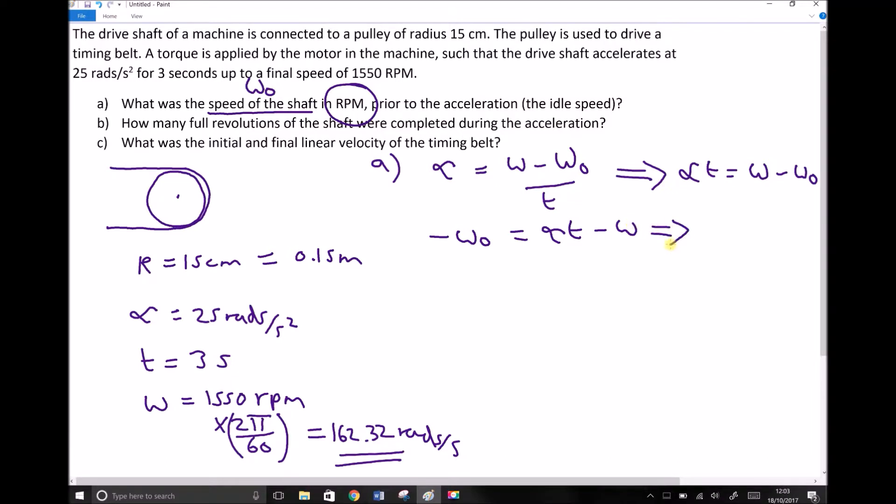So that there is going to give me omega zero, the thing I'm trying to find, equals minus alpha t plus omega. I've changed the sign of each term. Now I can rewrite that just to make things a little bit neater. Omega zero equals omega minus alpha t.